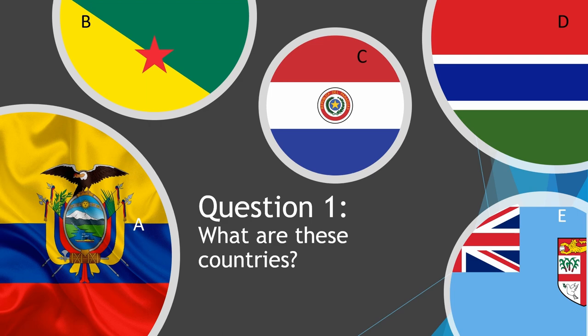And the answer is: A is Ecuador, B is French Guiana, C is Paraguay, D is Gambia, and E is Fiji.